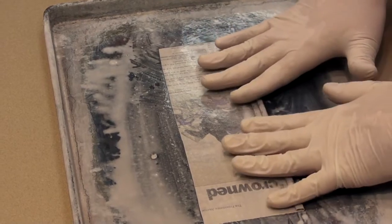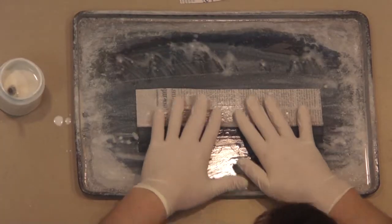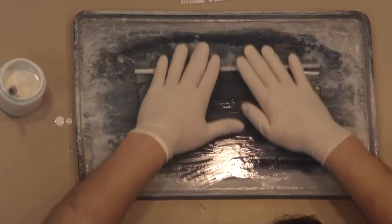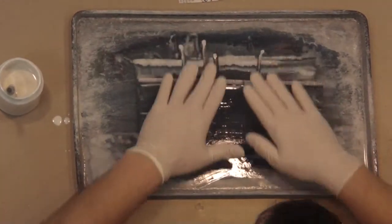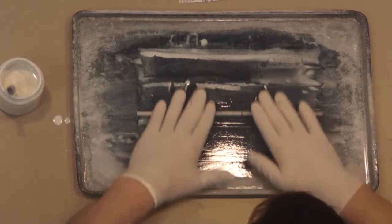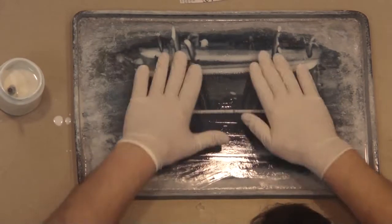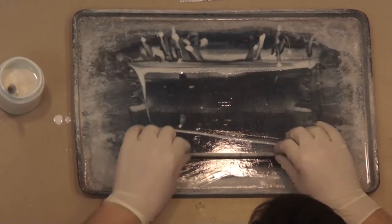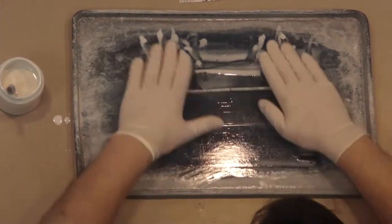Now we begin the rolling process. Rolling while applying very light pressure allows the newsprint to slip past itself and go from a tube to a solid makigami strip. Continue rolling with light pressure until the tube becomes a solid strip.